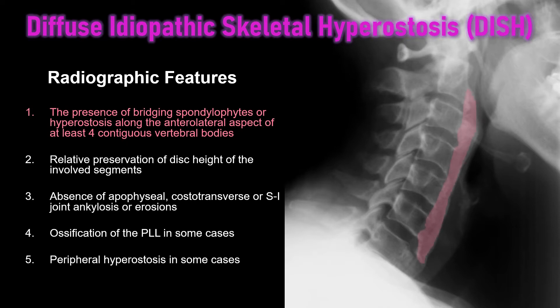The key radiographic feature of DISH is flowing hyperostosis, or bridging spondylophyte formation, in three or more contiguous segments. This is best seen in the highlighted region anterior to the cervical spine, and again this is continuous flowing hyperostosis — a key feature of DISH.